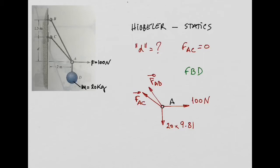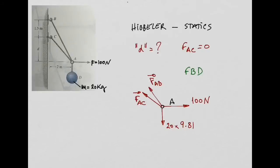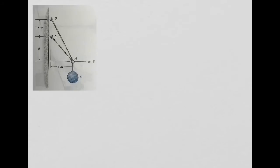There's a student question: why are FAC and FAB pointing away from A? To answer that, imagine I isolate cable AB. So let's draw it here — this is my cable, point B on one end and point A on the other.